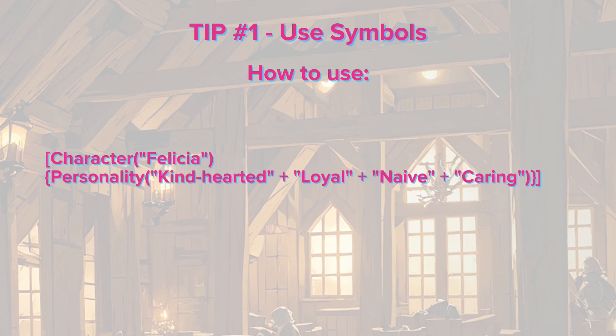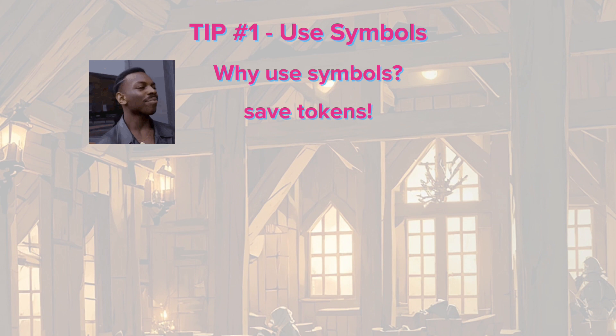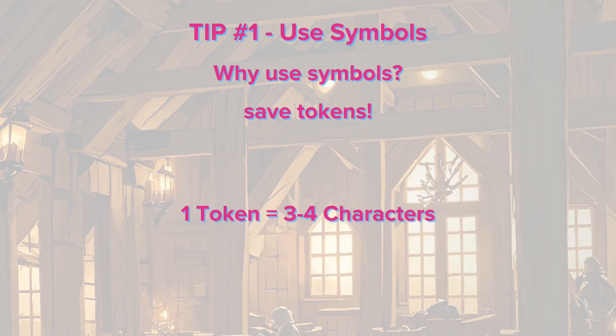Here is an example and you can see how we used all the symbols in this section. Another reason that we use these symbols is because they help us save on tokens. A token is like the words AI uses to understand the meaning of your input — one token is around 3 to 4 characters.